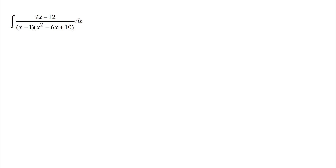Ready for a really fun partial fractions problem? This one's kind of crazy. One thing that's helpful is that they've already factored it, at least partway for us. You'd want to check the second factor and think about whether you can factor it more, but if you think about factors of 10 that add up to negative six, you'll figure out pretty quickly that you cannot factor this more, at least over the rational numbers. So we're going to leave that one unfactored — it's irreducible over the rational numbers, so I can't rewrite it as simpler linear factors.